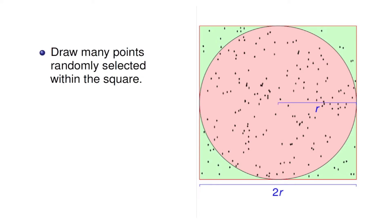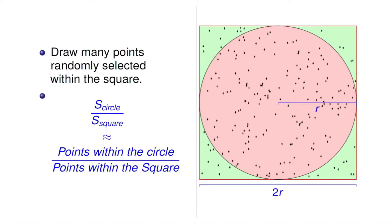Now if we draw many points randomly selected within the square, then we will see that the area of the circle over the area of the square is going to be approximately the number of points within the circle over the number of points within the square, because these points are randomly selected.